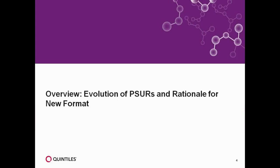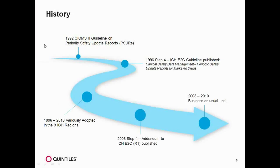The first chapter we're going to talk about is an overview — a quick history and evolution of the PSURs and rationale for our new format. In 1992, the ICH E2C guidelines on PSURs were implemented, followed by 1996, when a Step 4 ICH E2C guideline was published: clinical safety data management with PSURs for marketed products.